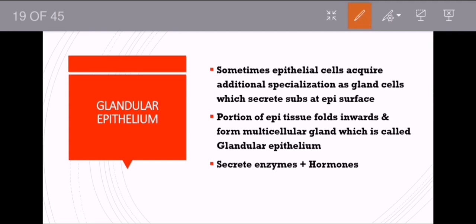Glandular epithelium: sometimes epithelial cells acquire additional specialization as gland cells. A gland is normally a substance that secretes hormones and certain enzymes. In grade 10 or grade 12 you will learn more about glands. When some epithelial cells — whether simple, squamous, columnar, or cuboidal — get specialized, they acquire this additional specialization as gland cells, meaning they are going to secrete substances on the epithelial surface.